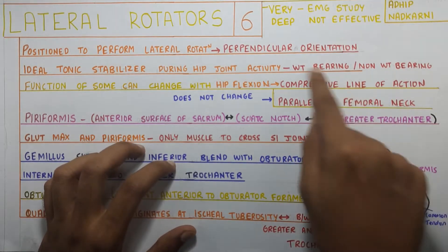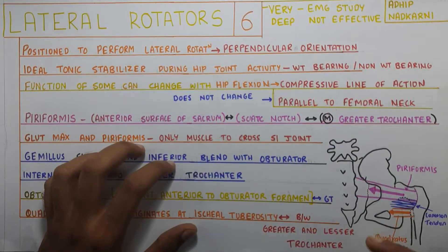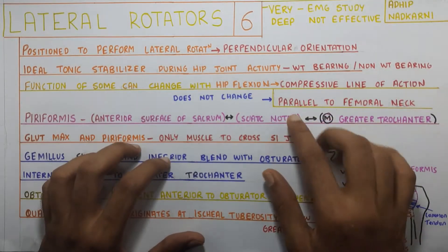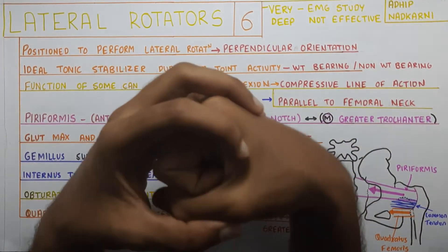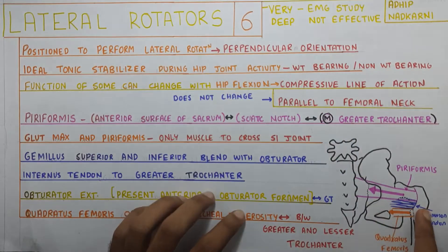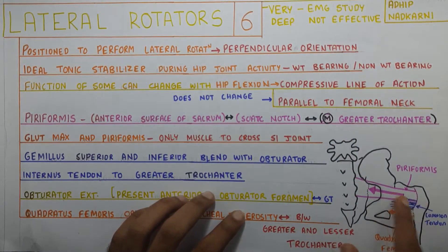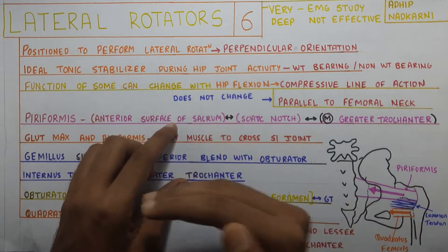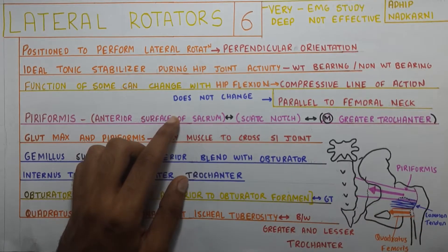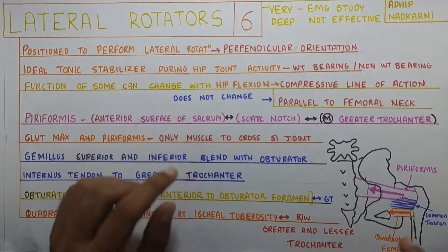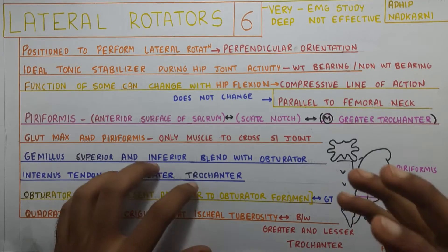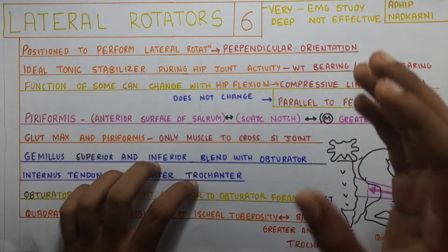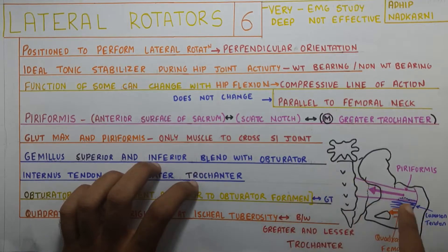However, they won't change their compressive line of action. This compressive line of action won't change because they are parallel to your femoral neck. So this is your femoral head, neck, and shaft. These muscles are very parallel to the neck, so no matter whether there is flexion or extension occurring, the compressive function will comparatively remain constant throughout the range of motion because they are always parallel to the femoral neck.